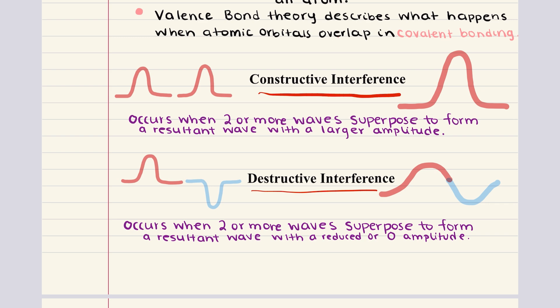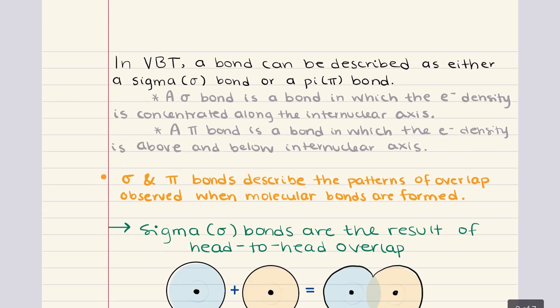Constructive interference occurs when electron waves are in phase, producing a wave with a larger amplitude, leading to bonding orbitals. This increased electron density between the nuclei stabilizes the bond. Destructive interference occurs when electron waves are out of phase, producing a node and leading to an anti-bonding orbital, where the electron density between the nuclei is reduced, destabilizing the bond. Therefore, valence bond theory states that bonds result from the constructive interference of electron waves.